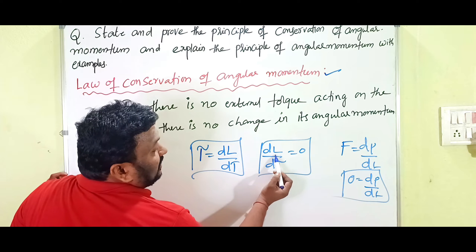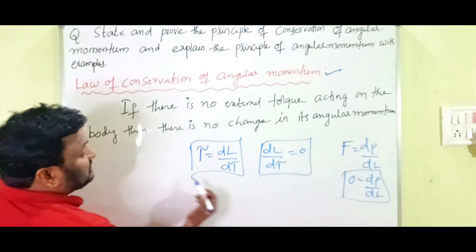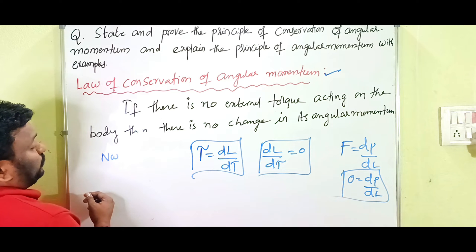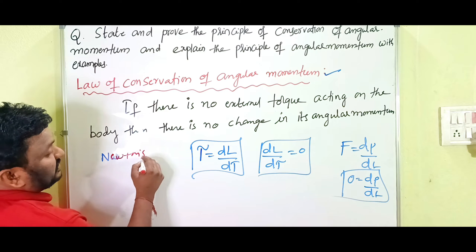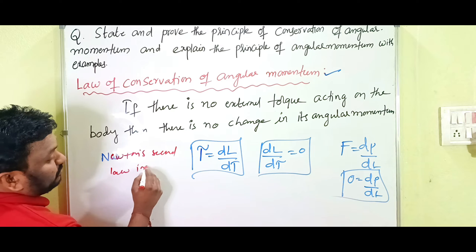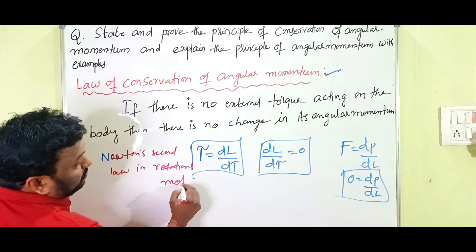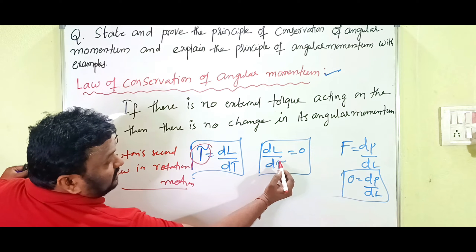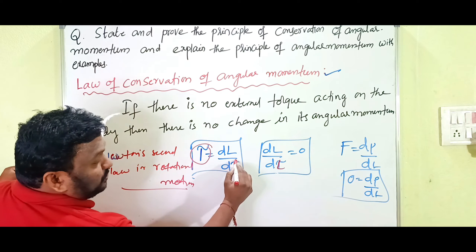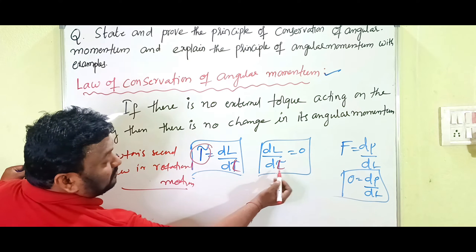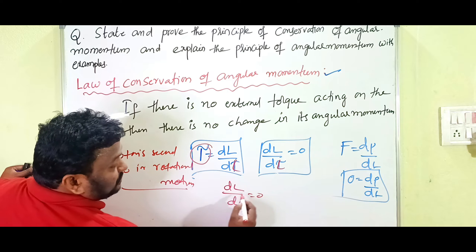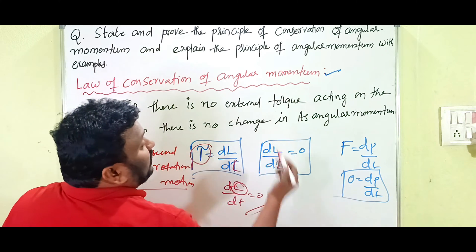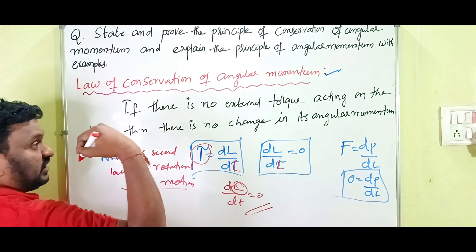Mathematically, we write d/dt of L = 0. Here, τ = dL/dt, which is Newton's second law in rotational motion. When there is no torque, τ = 0, so dL/dt = 0 — meaning there is no change in angular momentum. This is what we call the law of conservation of angular momentum.